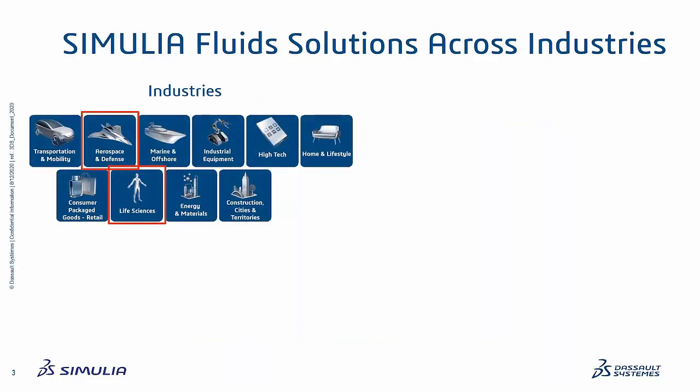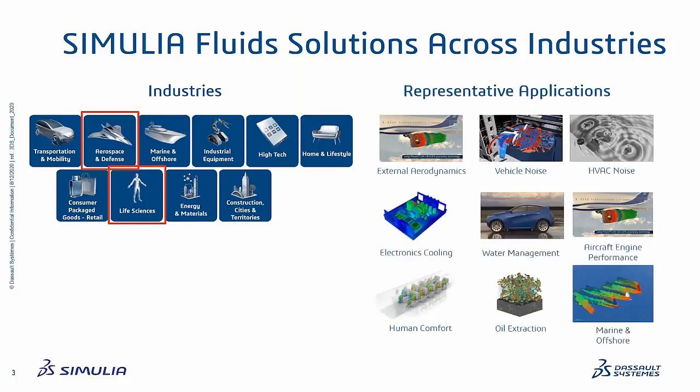Simulia products support a number of different industries, including transportation and mobility, aerospace and defense, marine and offshore, industrial equipment, high-tech, home and lifestyle, consumer packaging and goods, life sciences, energy and materials, and construction cities and territories. In this webinar, we're going to give a detailed example of an aerospace and defense use case, but also an additional example of how to use simulation, automation and design space exploration for a life sciences example.